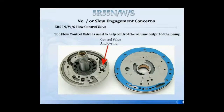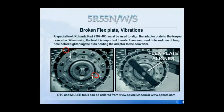For no or slow engagement on N, W, and S transmissions: make sure the flow control valve is in the pump and that the O-ring seal is in good condition. If the O-ring seal is bad or was forgotten, you'll have a problem with pump output — the pump won't prime correctly. Also, Ford has an alignment tool, Rotunda part number 307-403, used to align the flex plate and torque converter assembly. Make sure you use this tool. Without it, if your luck is bad, it could shake the pump right out of the truck. SPX owns Rotunda, Kentmore, and Miller, so you can get this tool through SPX.